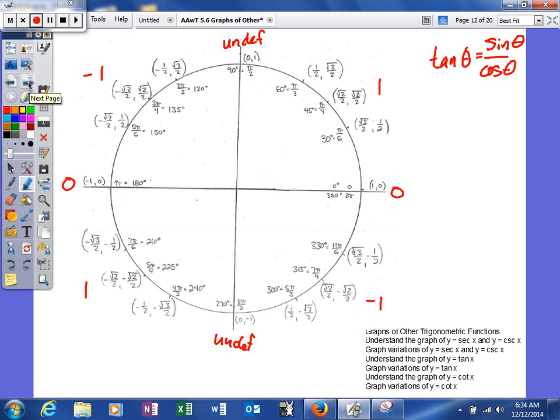First thing we're going to do is look at how we're determining what our tangent is. So our tangent of our angle is sine over cosine, so I've gone through and listed a couple. This would be 0 right here, and then 1, undefined, negative 1, 0, 1.